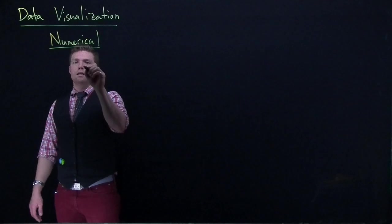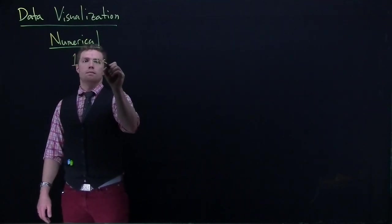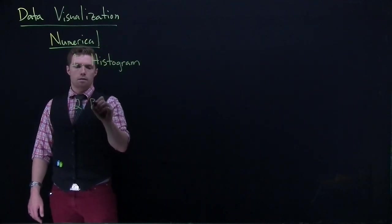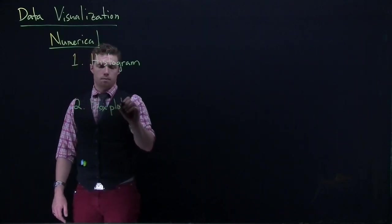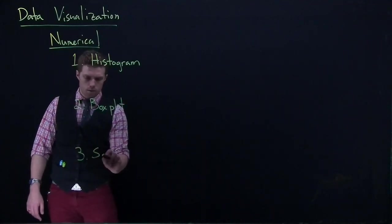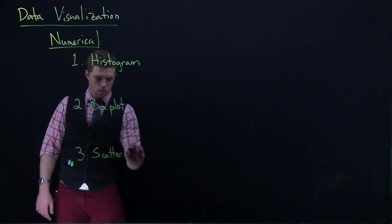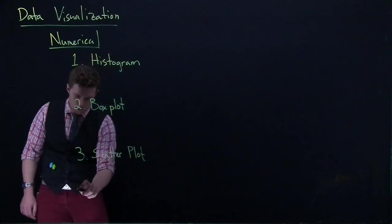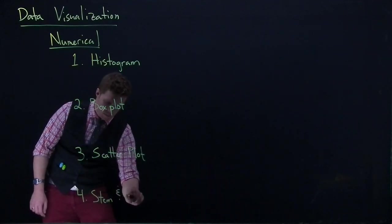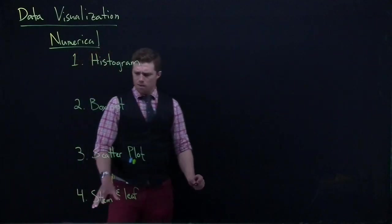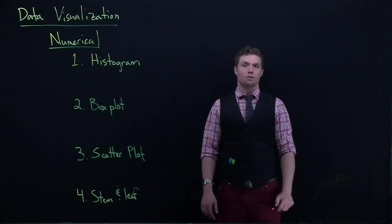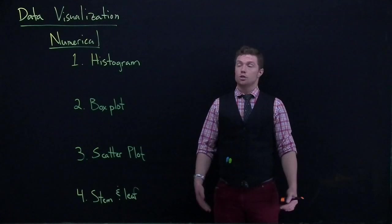So number one is a histogram. The second one that we'll talk about is a box plot. The third one that we're going to talk about is a scatter plot. And the fourth one is called stem and leaf. The stem and leaf one I particularly don't like, but I do include it because if you were to see it in literature or something, I would expect you to be able to actually read and understand what is going on.